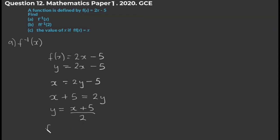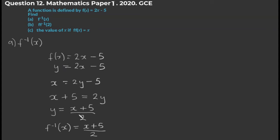This new expression we've found is the inverse of the earlier function. We write it using the inverse notation: f⁻¹(x) = (x + 5) / 2. So to summarize: replace f(x) with y, interchange x and y, solve for y — the new expression you get is the inverse.